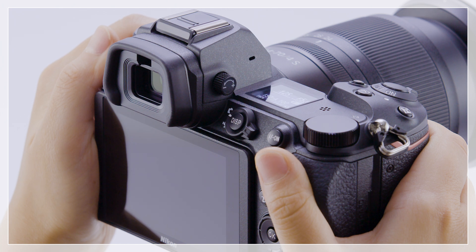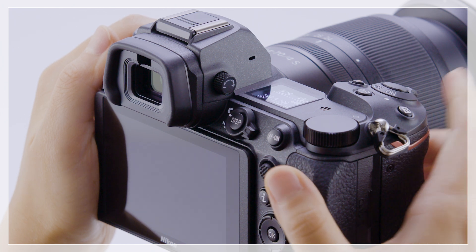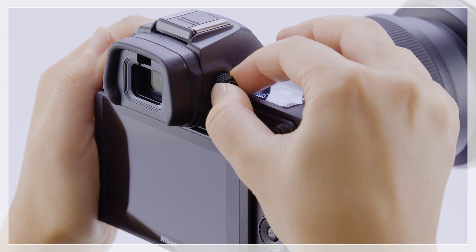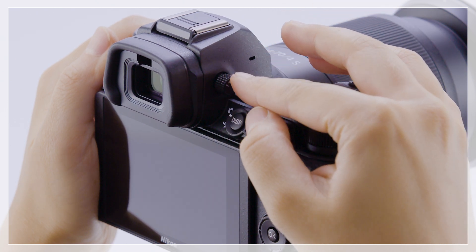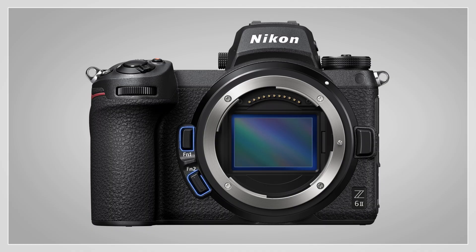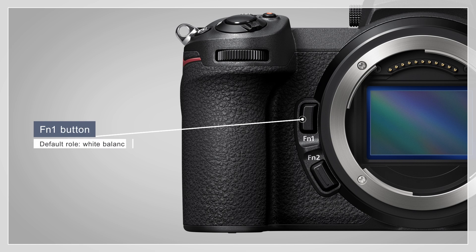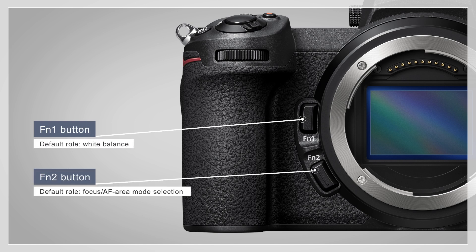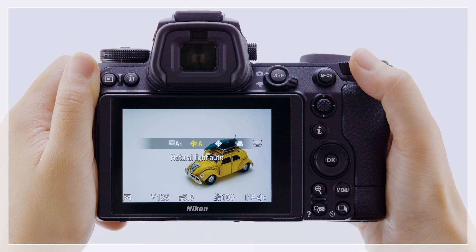If the image in the viewfinder is not in focus, focus can be adjusted by lifting and rotating the diopter adjustment control. You can choose the roles played by the FN1 and FN2 buttons. At default settings, the FN1 button is used for white balance and the FN2 button to choose the focus and AF area modes. Hold the button and rotate the command dials to choose a setting.